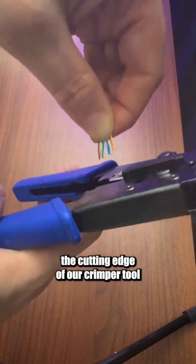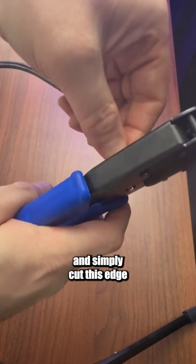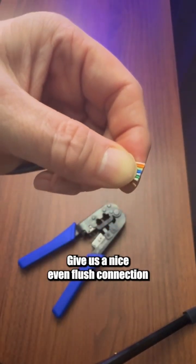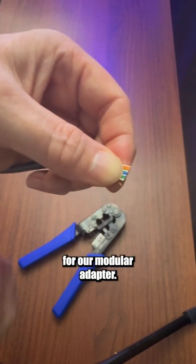Then what we're going to do is take the cutting edge of our crimper tool and simply cut this edge. Doing this will give us a nice even flush connection for our modular adapter.